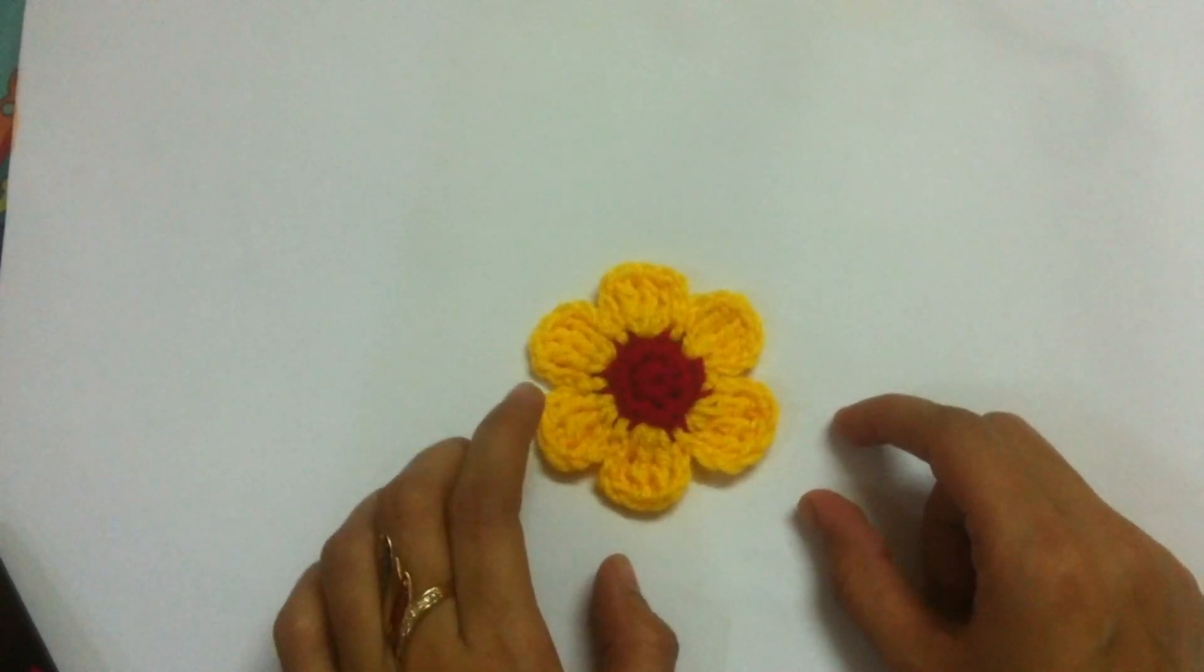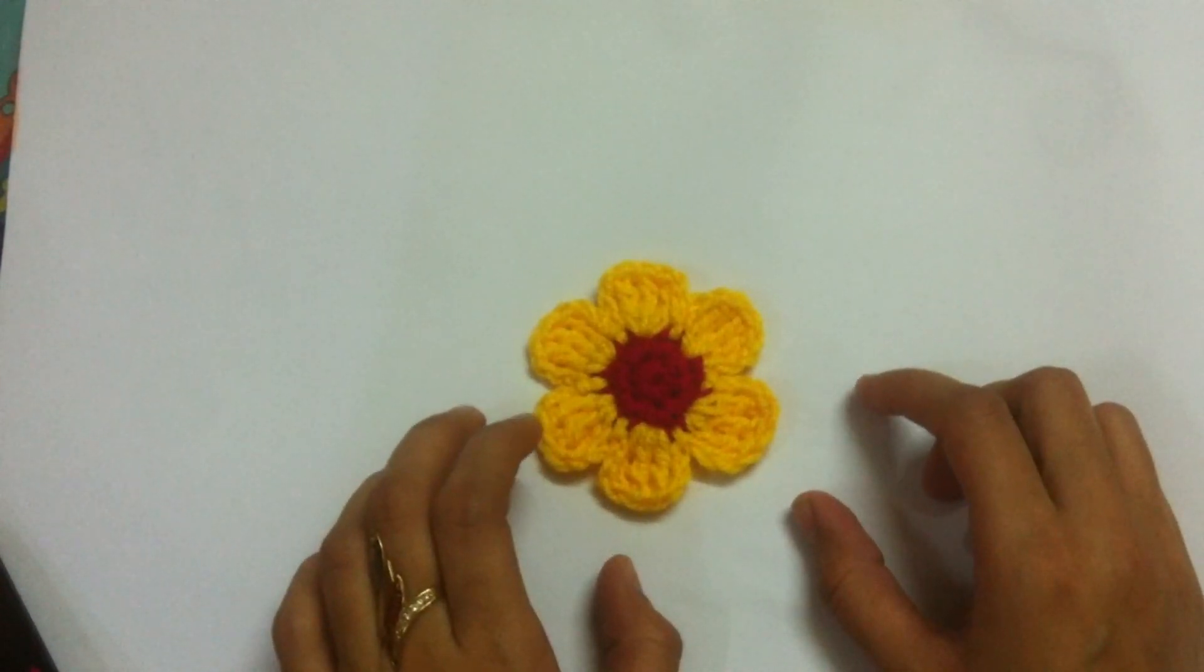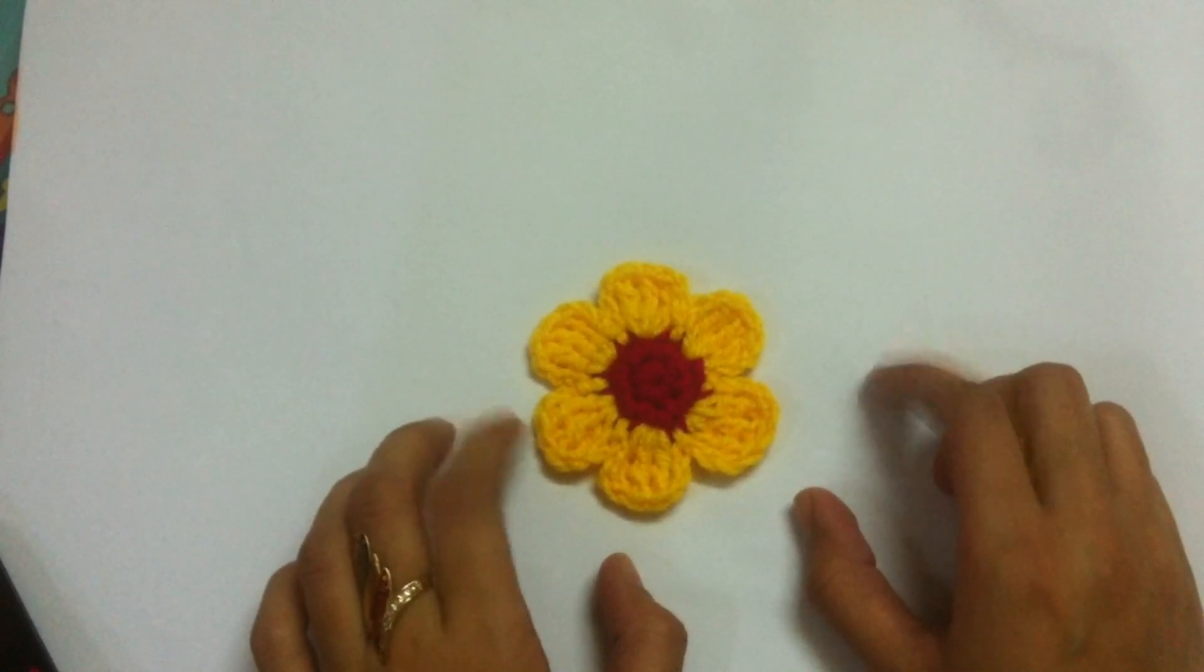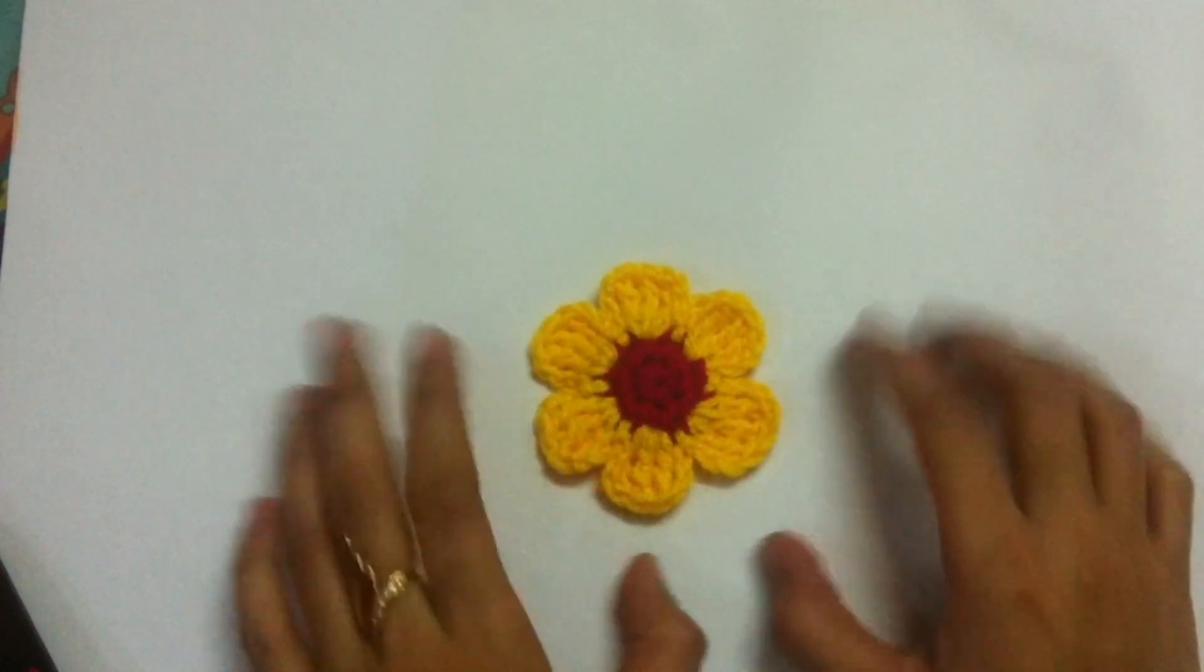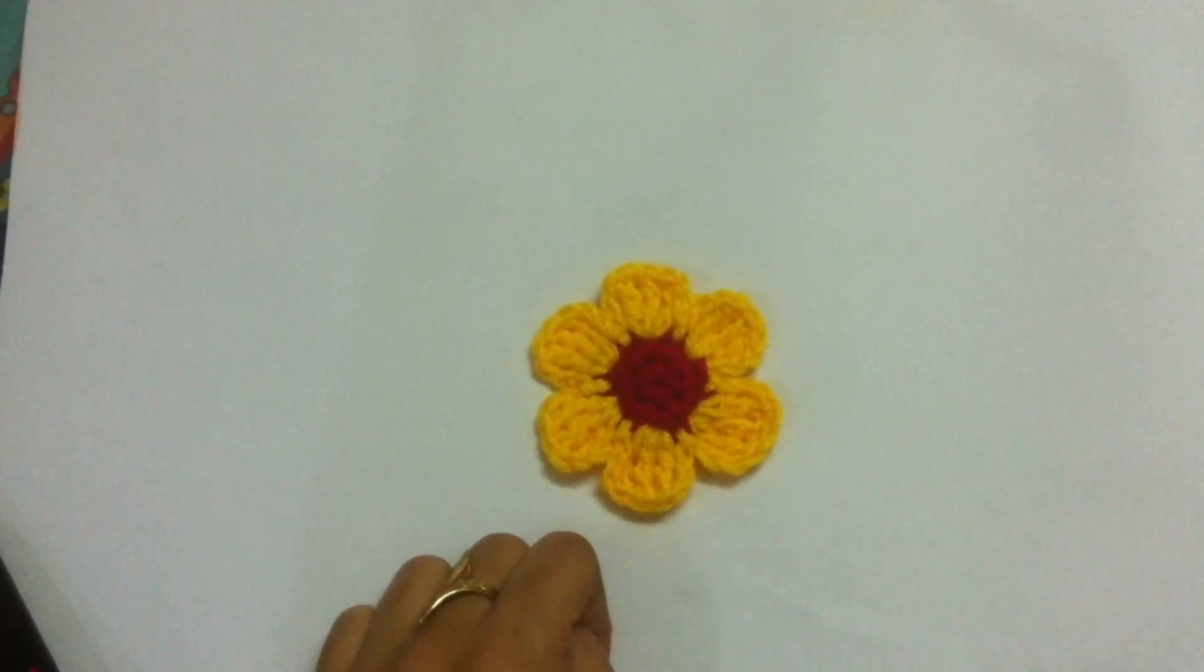Just wanted to say that I have used a thicker yarn for this so that the stitches are quite visible and easy to understand. If you make it with thin yarn and a smaller hook, definitely your flower size will be smaller. If you are using the bigger hook and thicker yarn, definitely your flower size will be a bit bigger. So happy hooking, stay blessed, and have a great day. Please don't forget to subscribe to my channel. Do like, comment, and share my videos. Have a great day, bye.